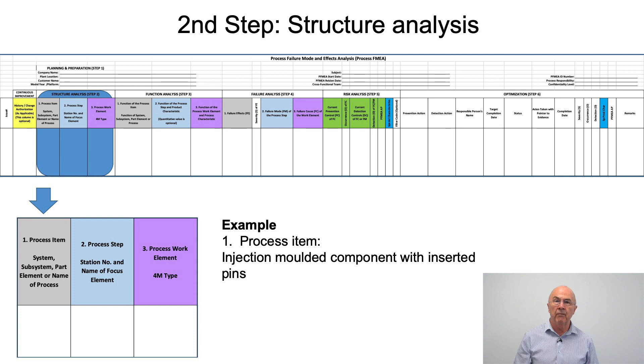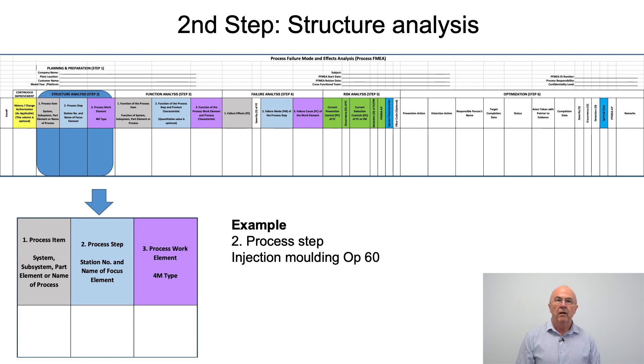This is a saleable product in this case that we are going to supply to GM because within our factory after the product is molded we are not going to do any other assembly activity. The next box is the process step. The team have decided here that the focus of the analysis for this part of the FMEA is going to be injection molding operation 60.